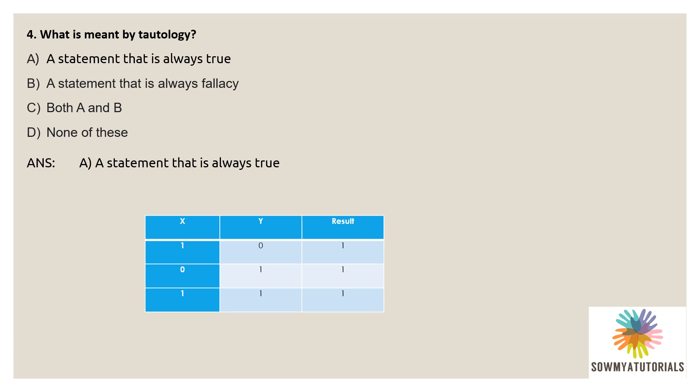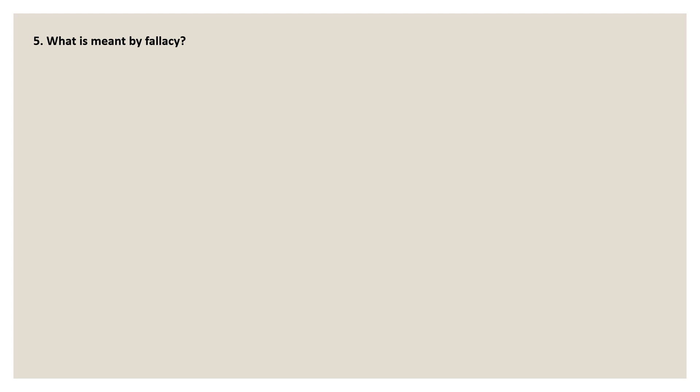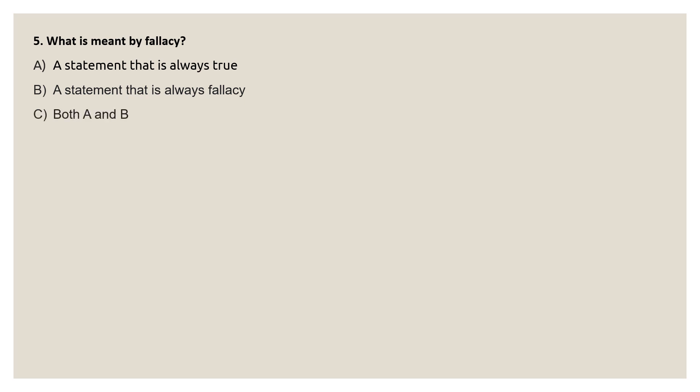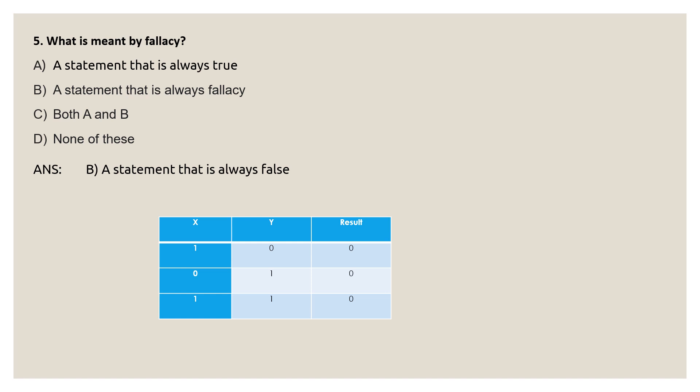Next question: what is meant by fallacy? Options are: A) A statement that is always true, B) A statement that is always false, C) Both A and B, D) None of these. The correct answer is option B — a statement that is always false is called a fallacy. In the truth table, if all the result column values are false, represented as zeros, then the statement is a fallacy.